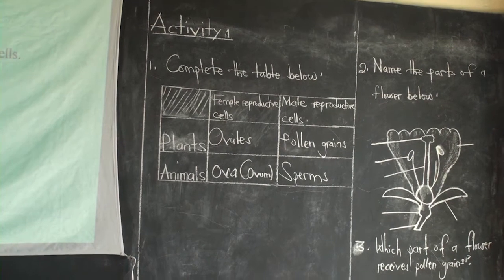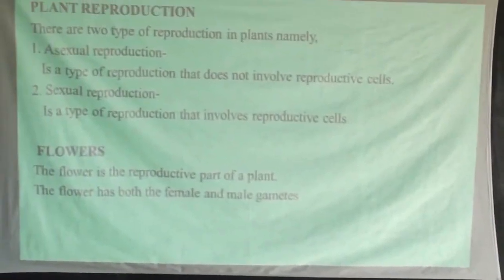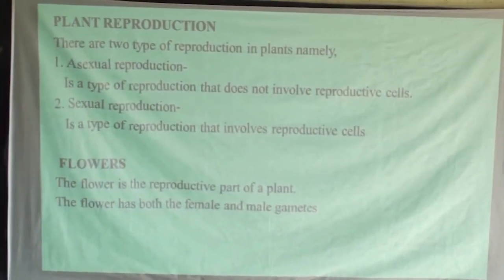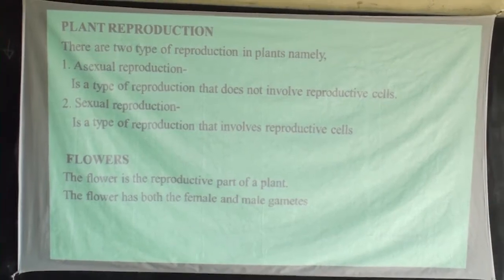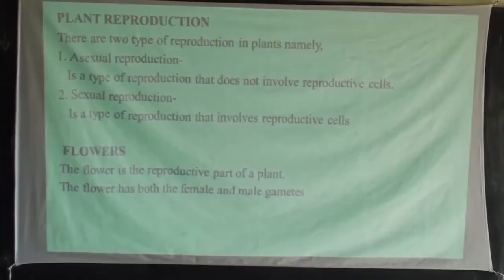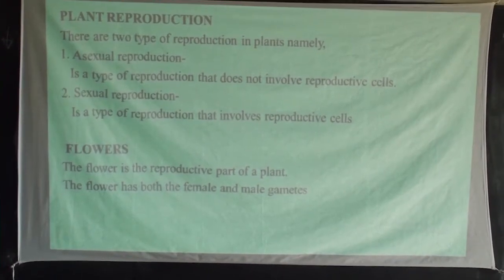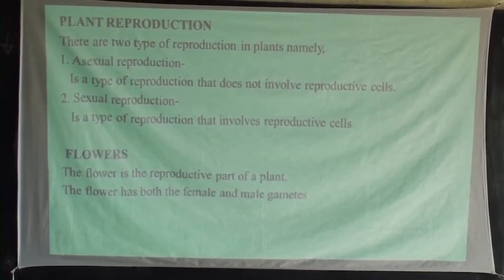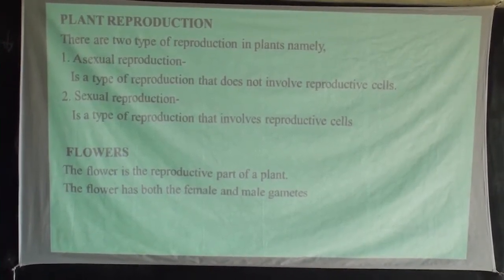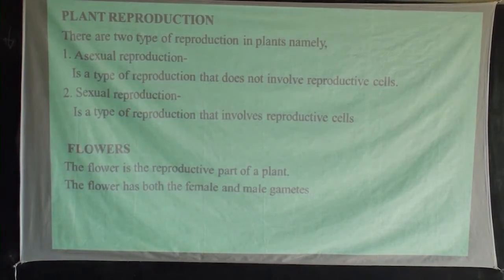Looking at reproduction in plants basically — how plants reproduce — mainly plants reproduce by means of flowers. Within the flowers, the male cells and female cells will fuse, which will lead to fertilization in the plants. That's why we now want to go ahead and look at flowers.